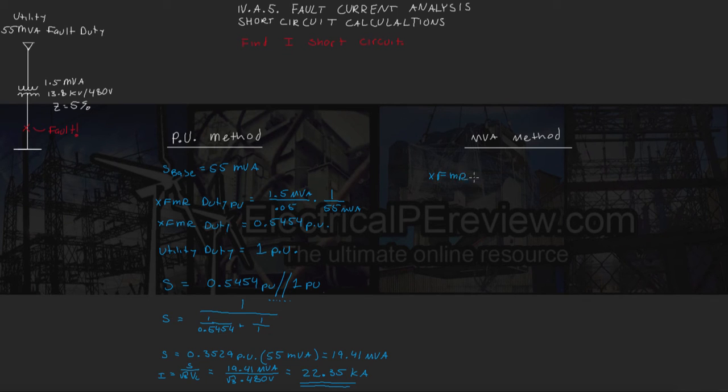and that's going to be equal to the transformer's power rating of 1.5 MVA divided by its impedance, 0.05, which gives us 30 MVA,